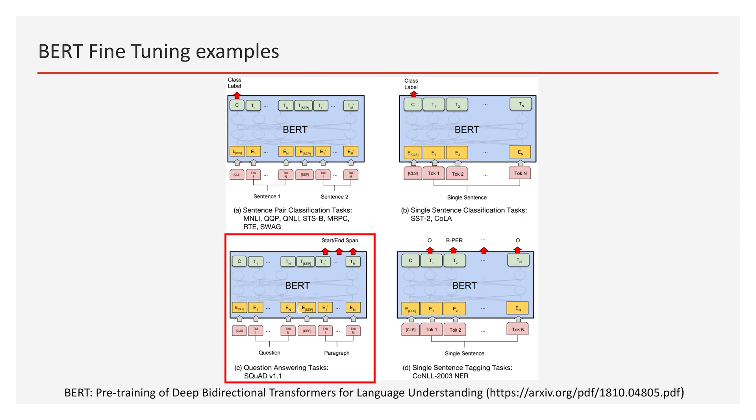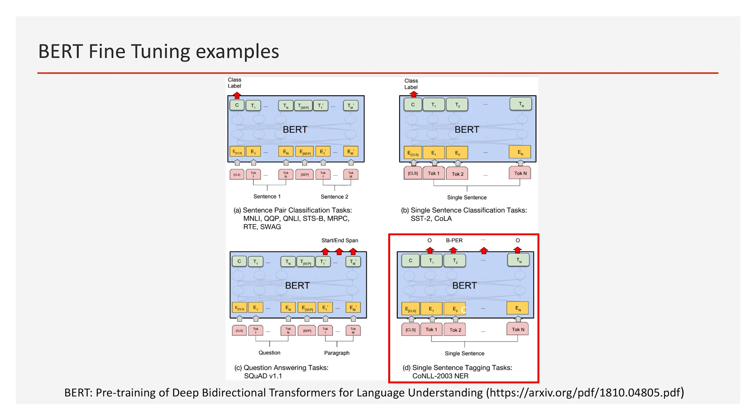For question answering, the input has a question sentence and a paragraph sentence. You train the last tokens to have start and end spans, which is the answer from the paragraph. You can also fine-tune BERT for sentence tagging — since each token has a corresponding output, we can train the output to be the tagging label for each token.